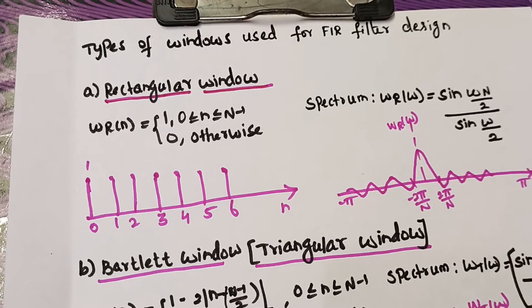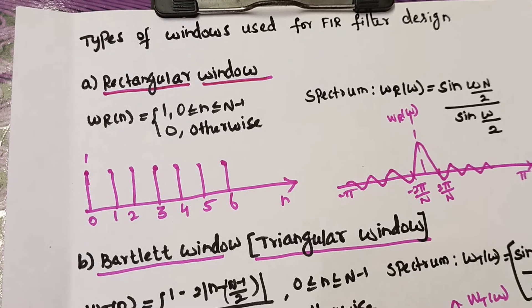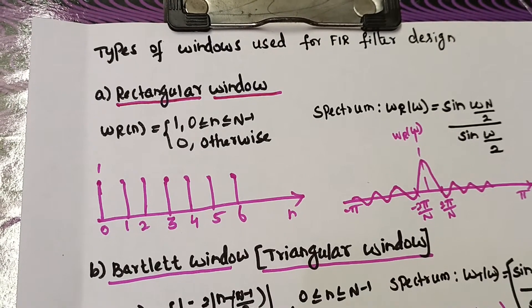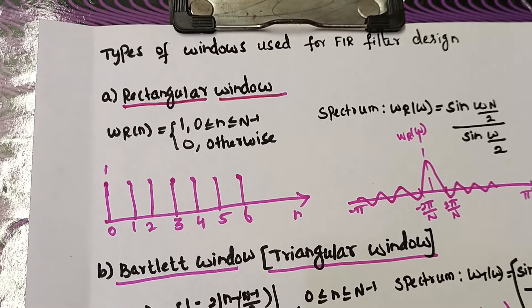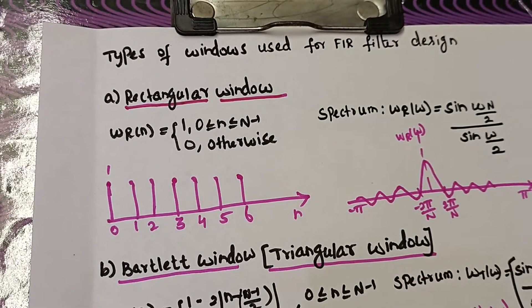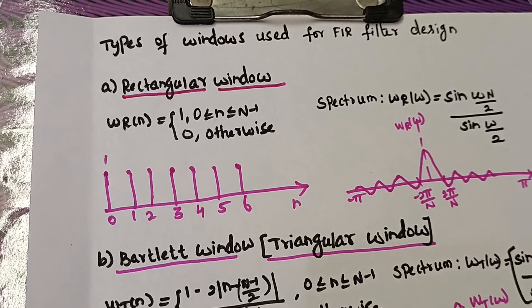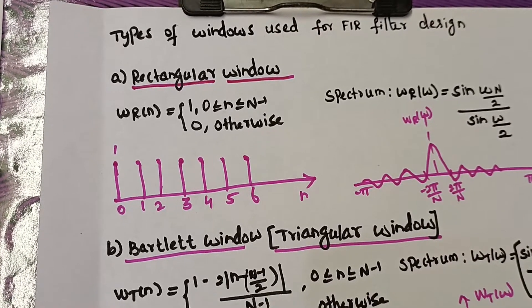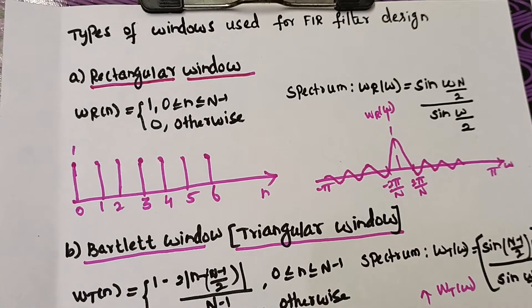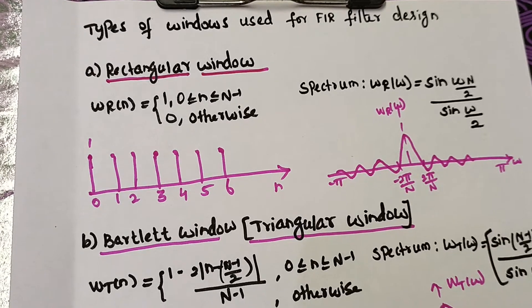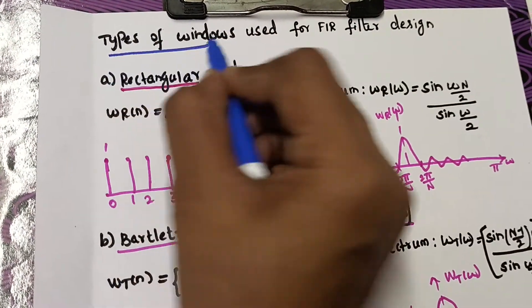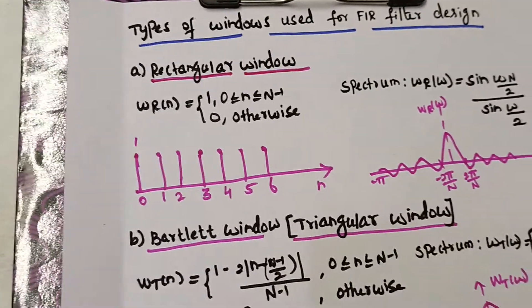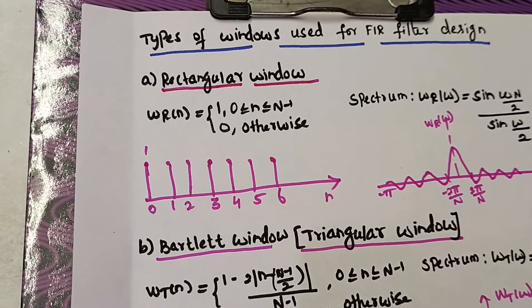Good morning students. In this video we are going to see the different types of windows used for FIR filter design. We know FIR filter is a finite impulse response filter in which the impulse response will be of finite duration. These windows will help us to convert the infinite duration impulse response sequence into a finite duration sequence.